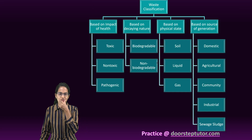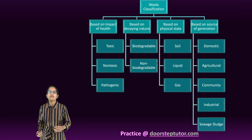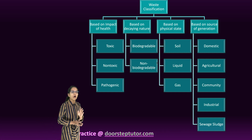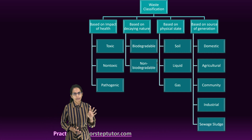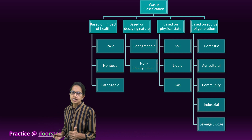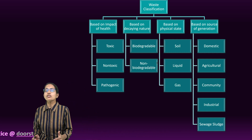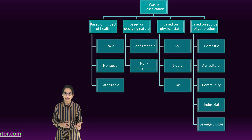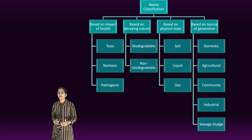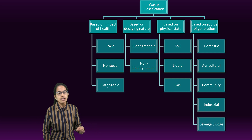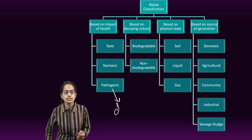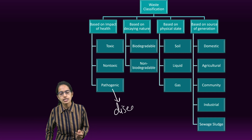Now how do we classify waste? Classification of waste can be done broadly on four parameters. The first parameter is based on its impact on human health. So it can be toxic, non-toxic, or pathogenic. Pathogenic, as the name suggests, is disease causing.